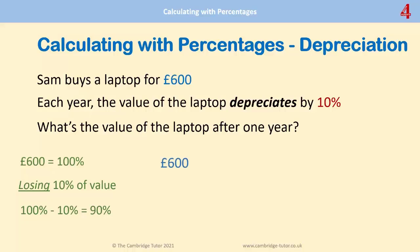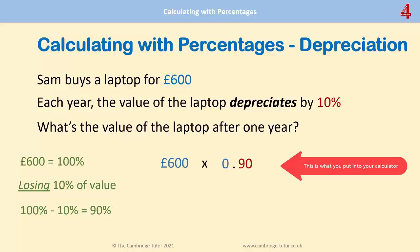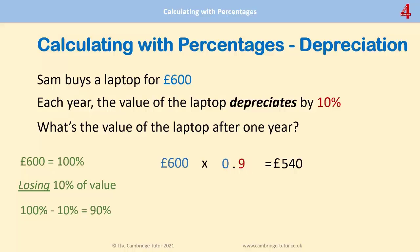When you're keying this into the calculator, it's £600 multiplied by... This time, you want your answer to get smaller, so you're not going to include the 100%. You'll be multiplying by zero point, then the percent — not 10%, but the 90% that's left. Your answer will still be smaller than £600. 90% as a decimal is 0.9, and that means at the end of the year, the laptop will be worth £540.